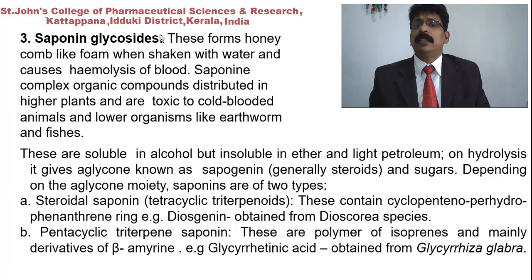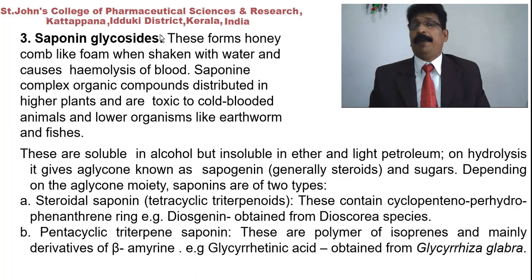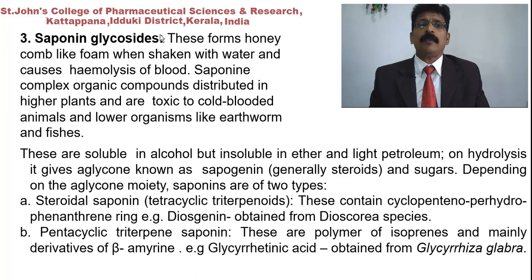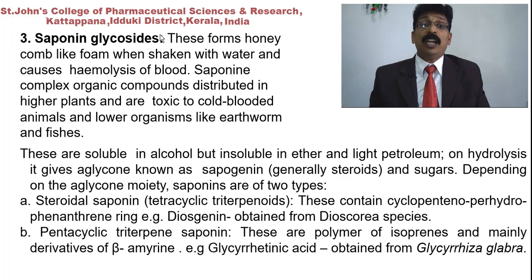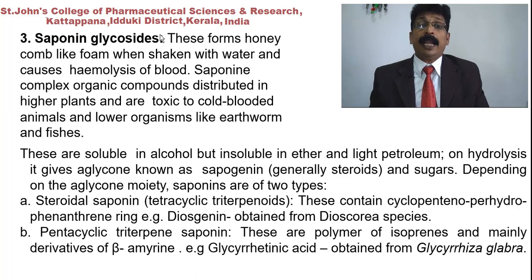Saponin glycosides were also studied in the previous class. They are foam-forming, soap-like substances that reduce surface tension when added to water, forming honeycomb-like foam when shaken. They cause hemolysis in blood. Saponins are complex organic compounds distributed in higher plants, toxic to cold-blooded animals and lower organisms like earthworms and fish. They are soluble in alcohol but insoluble in ether and petroleum ether. On hydrolysis, the aglycon is known as sapogenin, generally a steroid.